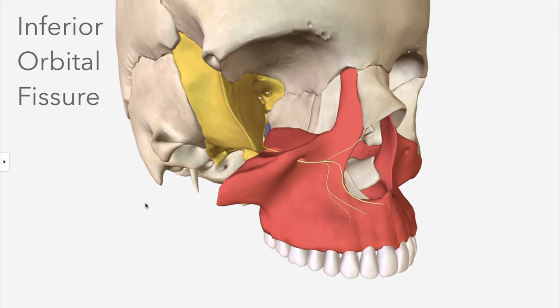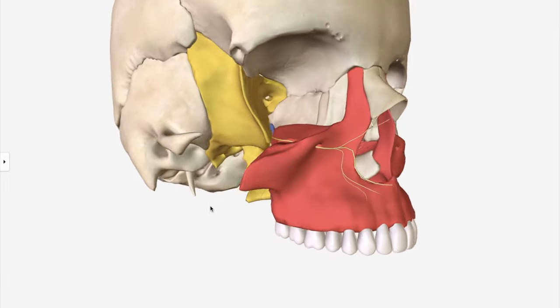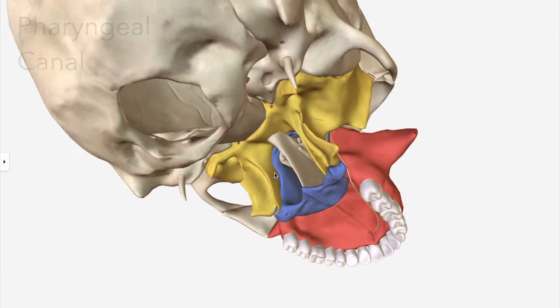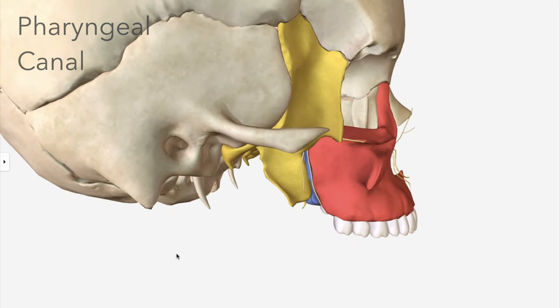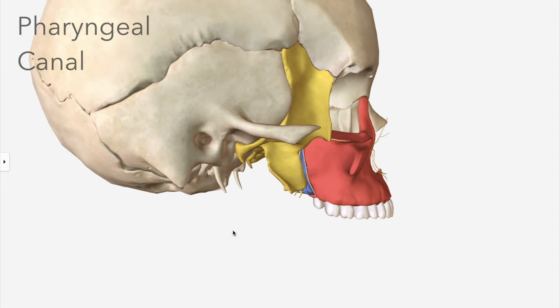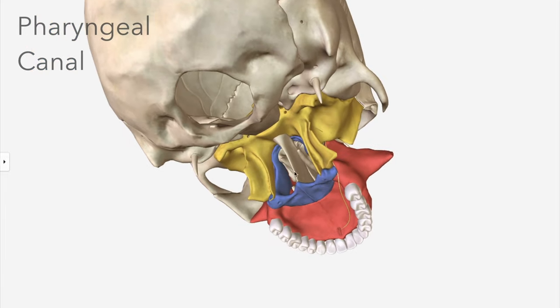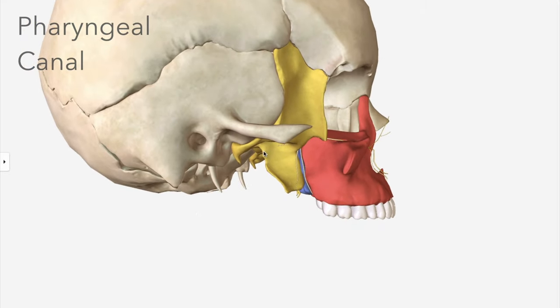This fissure intuitively opens into the orbit. Down here is the opening of the pharyngeal canal, which opens into the pharynx. So the pharyngeal artery and nerve, both are transmitted through the pharyngeal canal into the space of the pharynx.